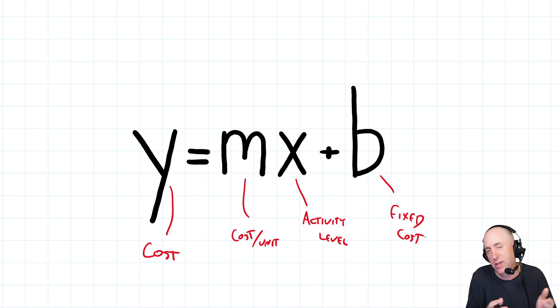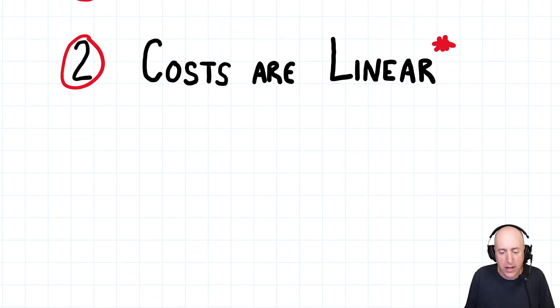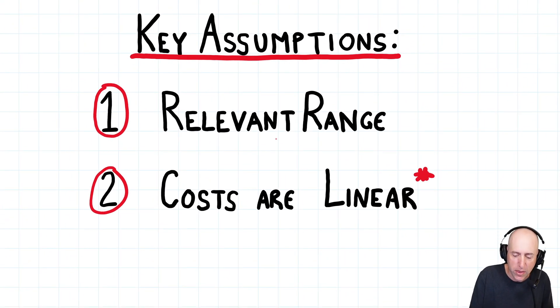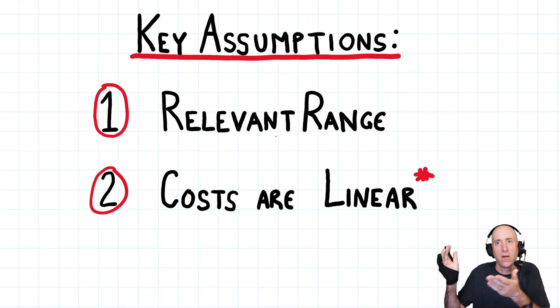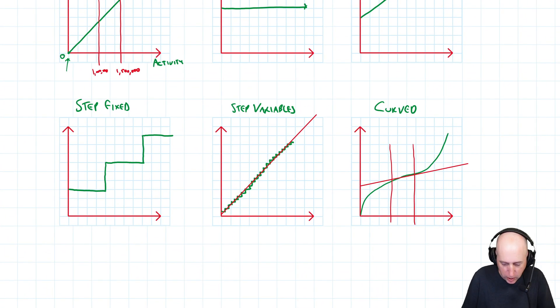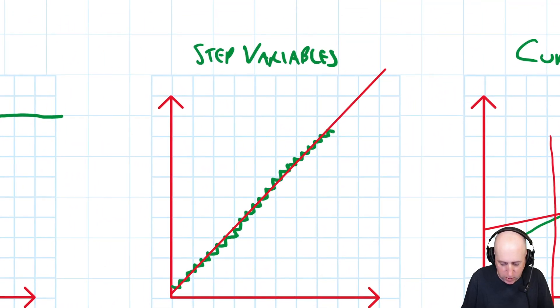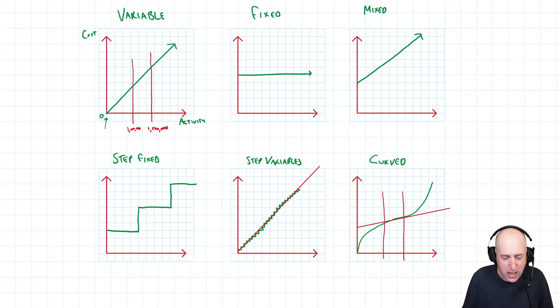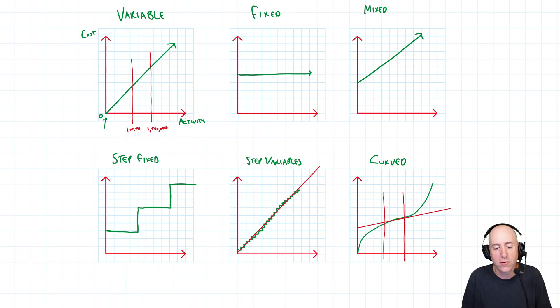What we find by the end of the chapter, actually next chapter, is we're going to use this information about our fixed cost and our variable cost per unit to do some powerful decision-making for a company. But it all hinges on this. We have to assume that within that relevant range, a linear line does a good enough job of explaining the cost. We know it's not perfect. This red line doesn't perfectly match the green line underneath, but we think a straight line does a good enough job.